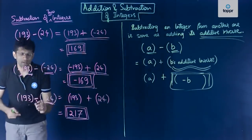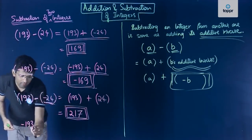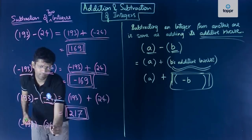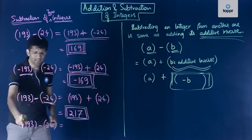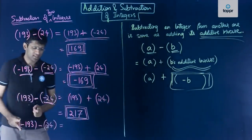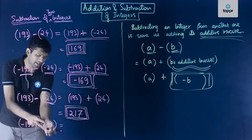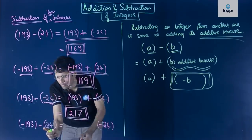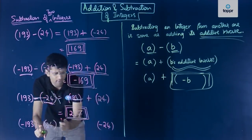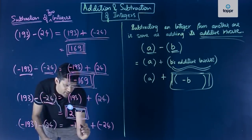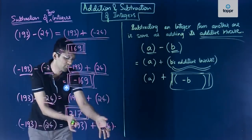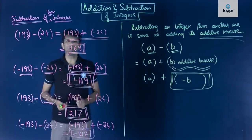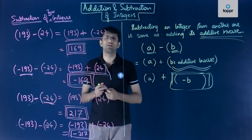The final case is when the first number is negative and the second number to be subtracted is positive. Applying the rule, the additive inverse of 24 is −24, the subtraction sign changes to plus, and the first number −193 is retained. So we get −193 + (−24) = −217. We have now seen how to perform subtraction of two integers for any integral values, whether positive or negative.